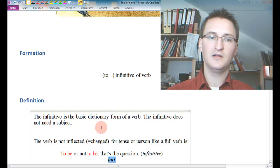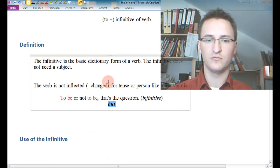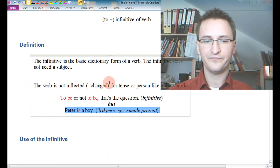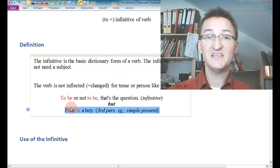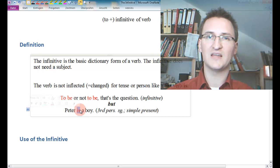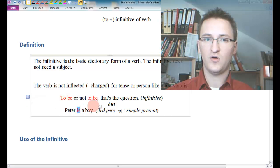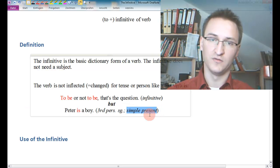Contrary to that, let's take a look at this verb sentence here: 'Peter is a boy.' Just by looking at the word 'is,' we get a lot of important information about the speaker. So it's got to be third person singular, and also it's got to be a sentence in the simple present.